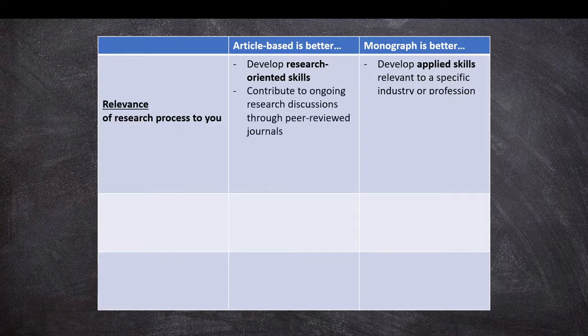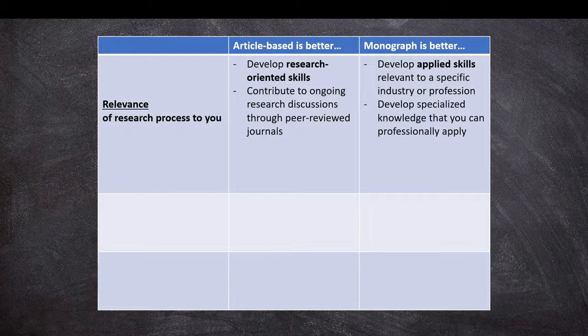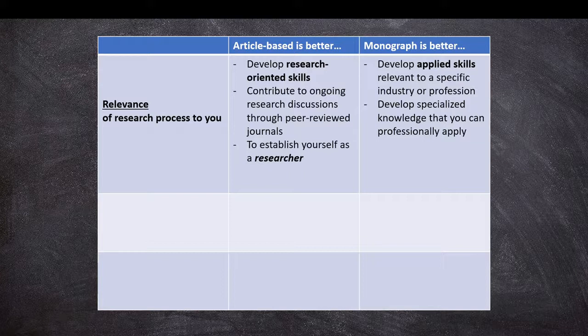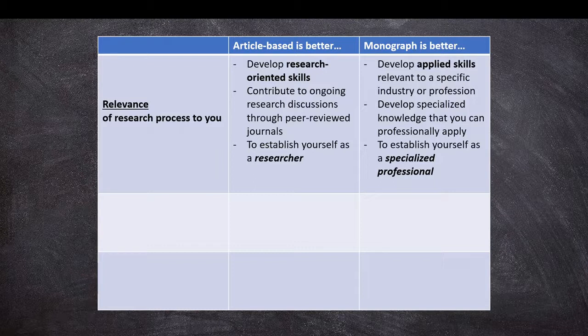If you're planning on contributing to ongoing research discussions through peer-reviewed journals, an article-based approach is better, whereas monographs are better to develop specialized knowledge that you plan on professionally applying afterwards. Article-based theses could be better if you're trying to establish yourself as a researcher in many fields, whereas monographs might be better if you're trying to establish yourself as a specialized professional, particularly outside of academic environments.